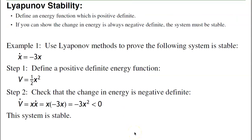A third definition of stability for nonlinear systems is Lyapunov, and this is what we use for bang-bang control. The idea is if I can define an energy function that is positive definite, and show that the change in energy is negative definite, then the system must be stable — the energy is always decreasing and can't go to infinity. For example, suppose I have x dot equals minus 3x. Define the energy function V equals one-half x squared, which is positive definite. The derivative V dot equals x times x dot equals minus 3x squared, which is negative definite. So the system is stable.